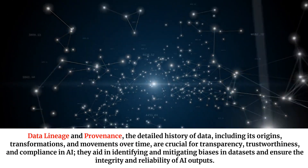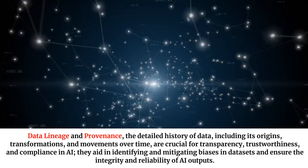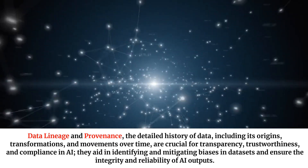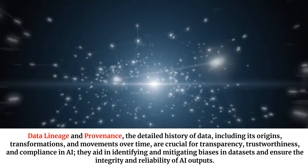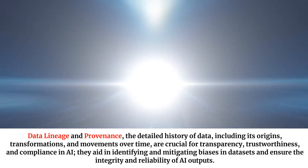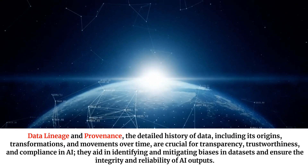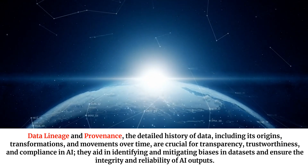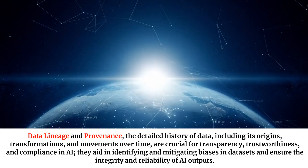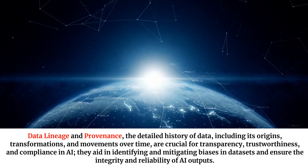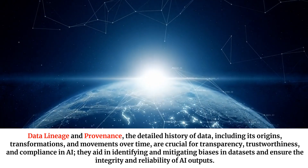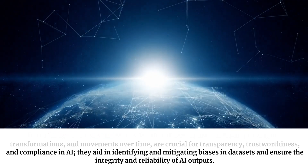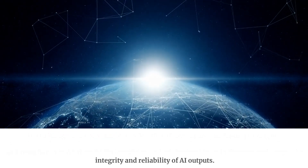Data lineage and provenance refer to the detailed history of data, including its origins, transformations, and movements over time. They are crucial for transparency, trustworthiness, and compliance in AI, aiding in identifying and mitigating biases in datasets and ensuring the integrity and reliability of AI outputs.